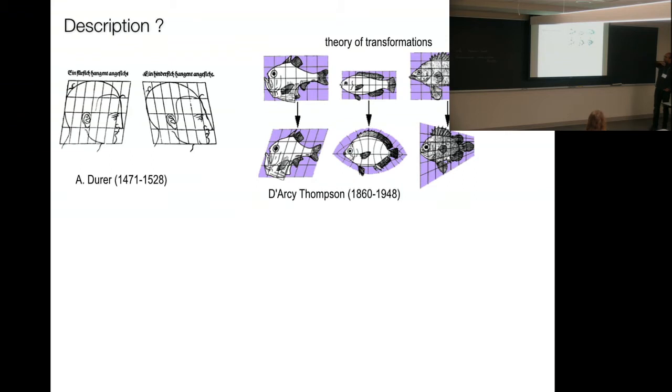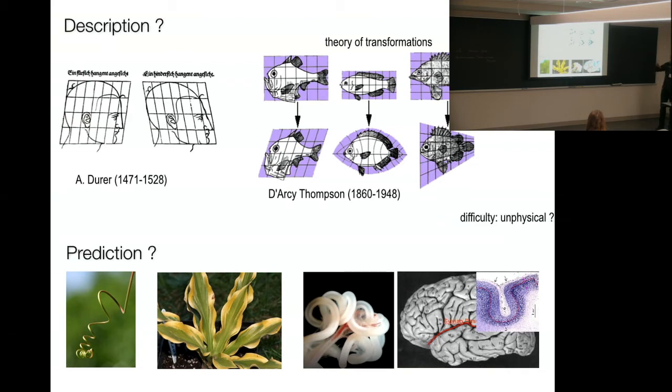Albert Dürer famously has this woodcut where he shows essentially how you can have shape transformations that are based from one to the other. The advantage of that is that it's beautiful, elegant, mathematically. The disadvantage is perhaps it's not physical.